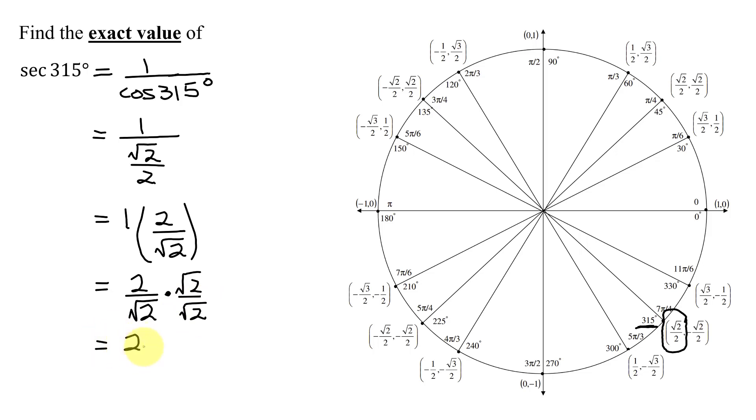So I get 2 times the square root of 2 divided by the square root of 2 times the square root of 2 is the square root of 4, which is 2.